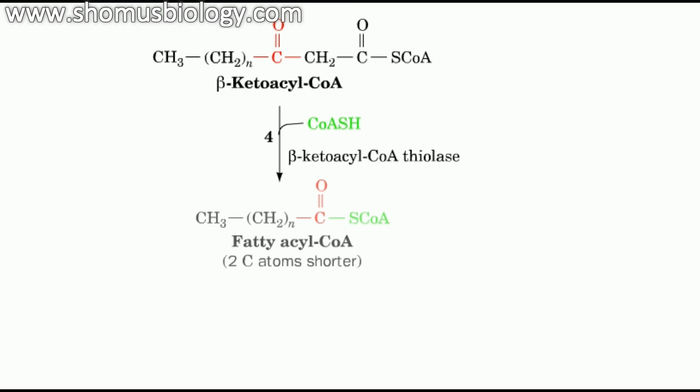The fourth step is cleavage of this C-alpha-C-beta bond in a thiolase lysis reaction with coenzyme A. As catalyzed by beta-ketoacyl-CoA thiolase, this reaction generates acetyl-CoA and another fatty acyl-CoA that is two carbons shorter.